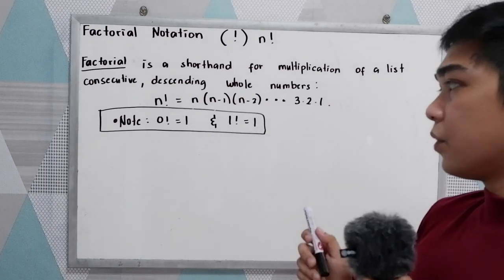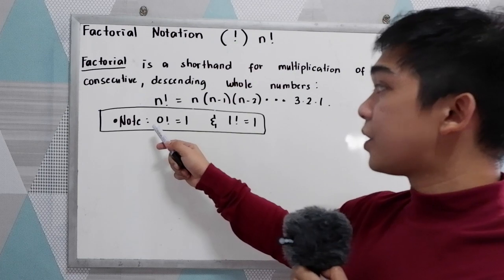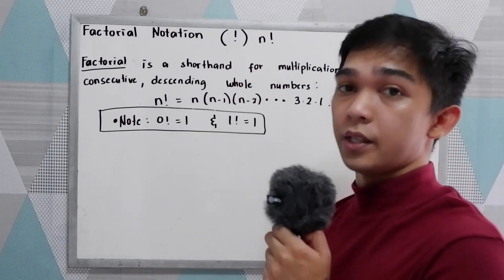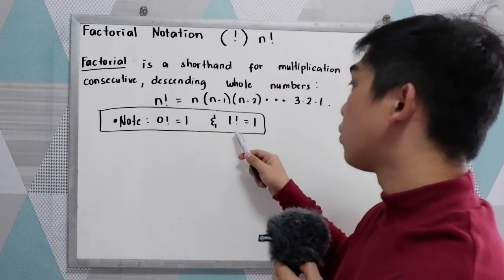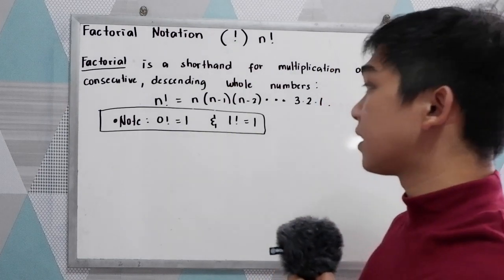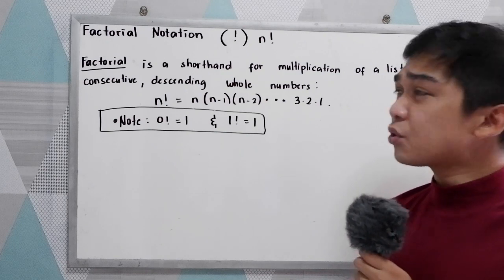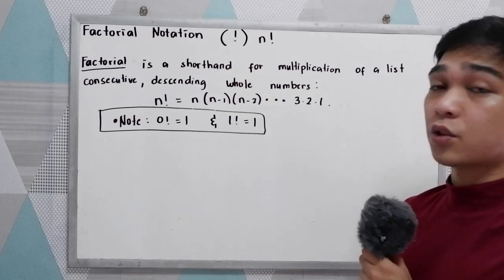Take note that 0 factorial is equal to 1, and 1 factorial is equal to 1. So how do we use this factorial?